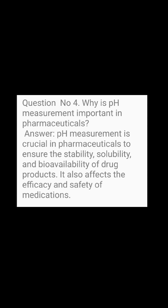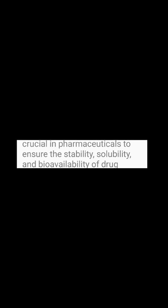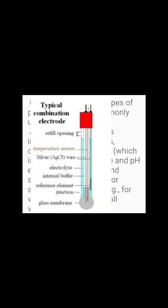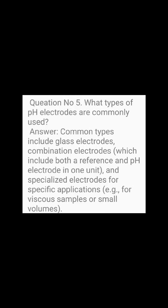Question number 5: What types of pH electrodes are commonly used? Answer: Common types include glass electrodes, combination electrodes — which include both a reference and pH electrode in one unit — and specialized electrodes for specific applications, such as for viscous samples or small volumes.